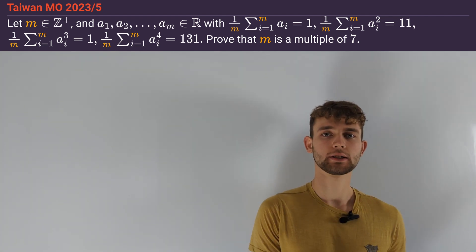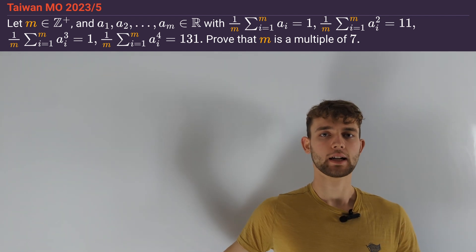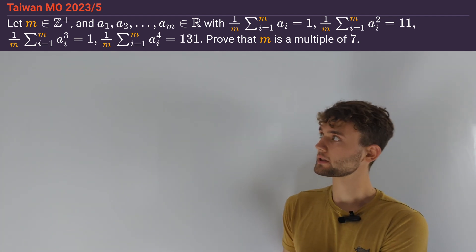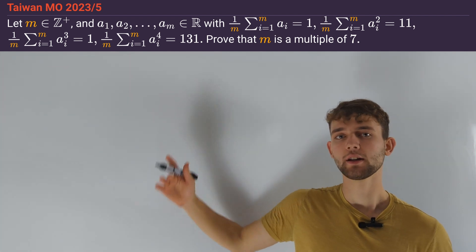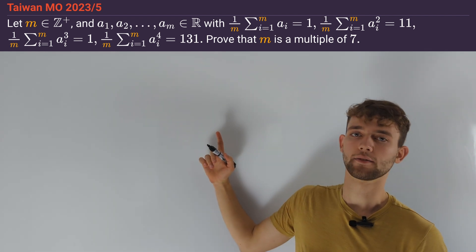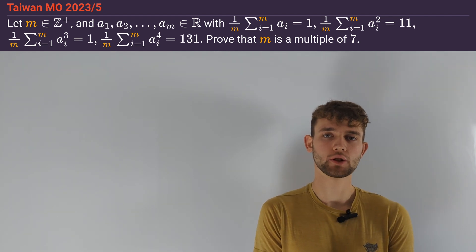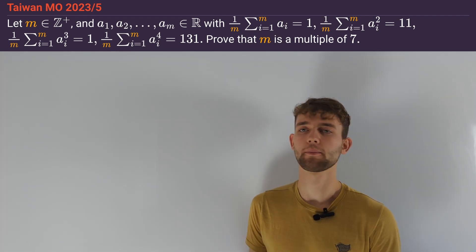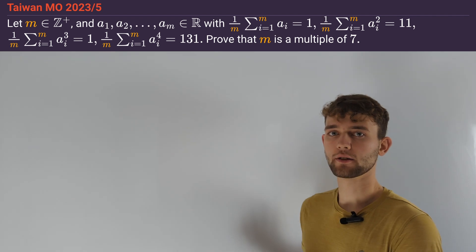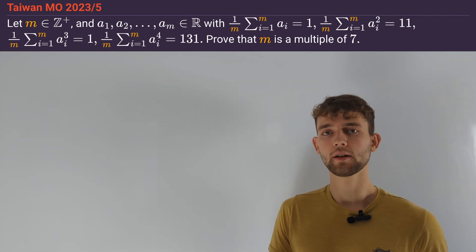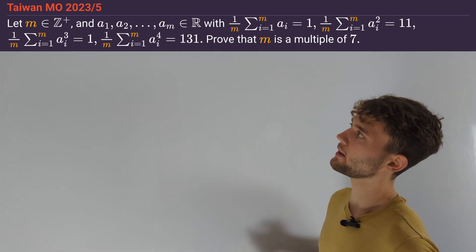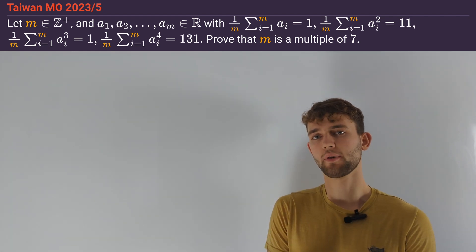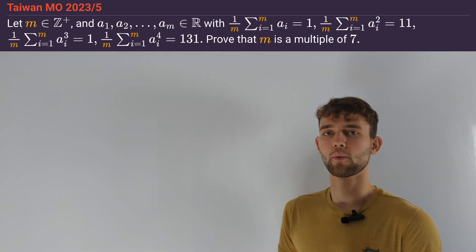A priori, m is just any positive integer and we have m variables a_1 up to a_m. However, there are only four constraints given, and this tells us that if we want to deduce something about m from this structure, there must be something special about these exact given numbers. We want to use the given information to show that the a_i must have some very special structure. For example, it would be nice if we could show that all a_i are equal to some number. However, since the average of a_i equals 1, equality would imply all a_i equal 1, which clearly contradicts the second condition.